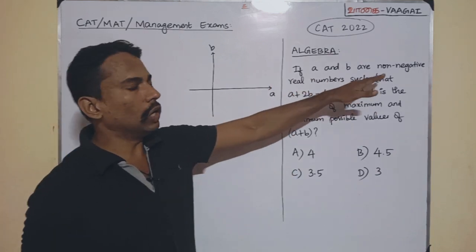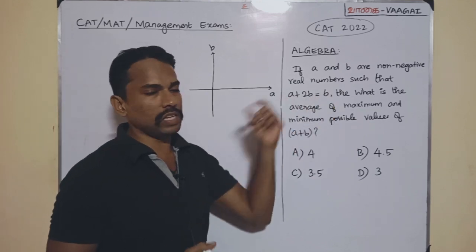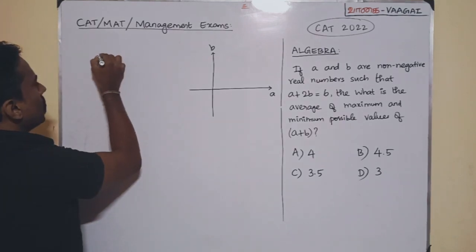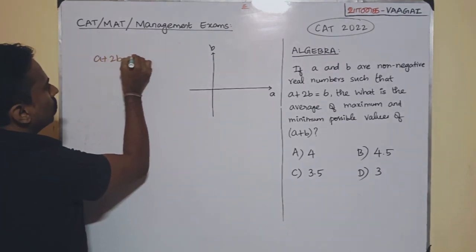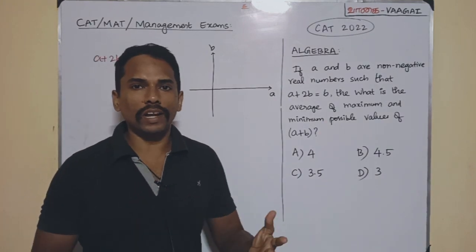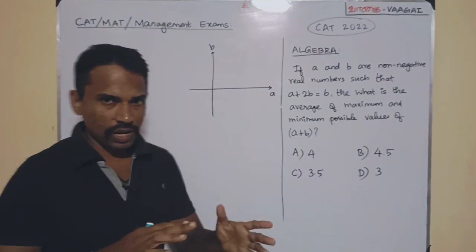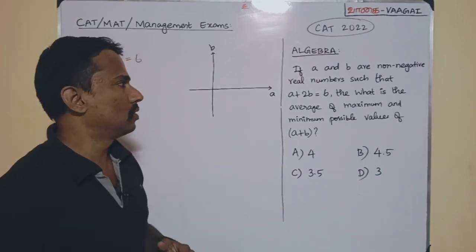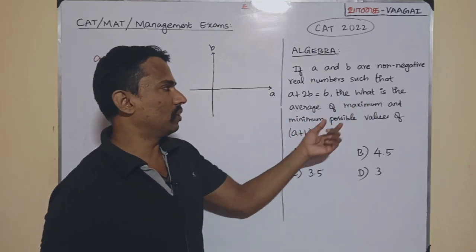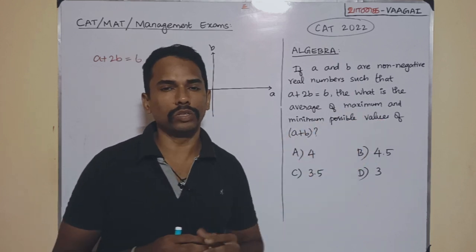Let us see the question. If A and B are non-negative real numbers such that A plus 2B is equal to 6. So, let us take the condition here. We have A plus 2B is given to be equal to 6. Now, looking at the equation itself, the relation between A and B, it is very clear that it represents a linear equation. So, that means there is a linear relation between A and B, these two variables. Then what is the average of the maximum and minimum possible values of A plus B?